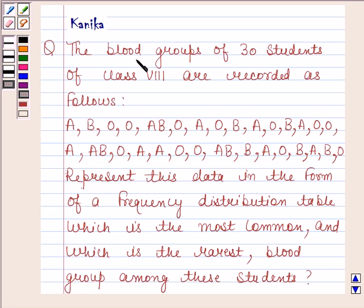The question says the blood groups of 30 students of class 8 are recorded as follows: A, B, O, O, AB, O, A, O, B, A, O, B, A, O, O, A, AB, O, A, AB, O, A, O, O, AB, B, A, O, B, A, B, O.